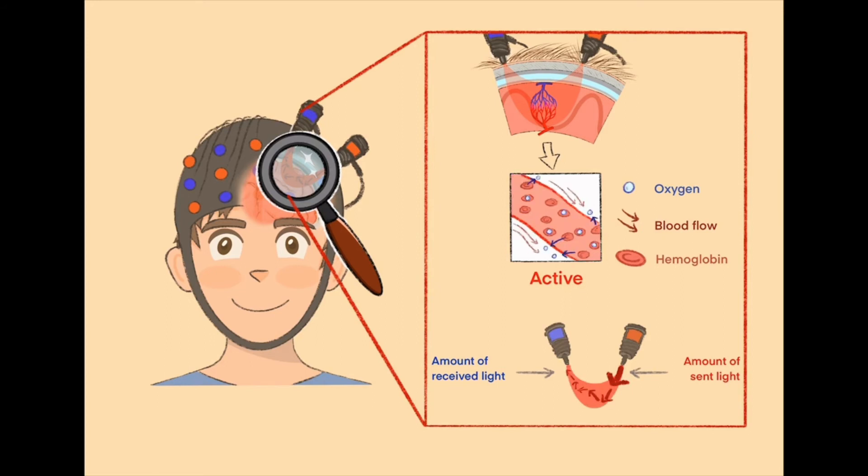Therefore, less light than the red sensors did send into your head reaches the blue sensors. Based on the difference between how much light is sent by the red sensors and received by the blue sensors, brain researchers can calculate how much oxygen a certain brain region has used. By doing that, they know which brain region is active.